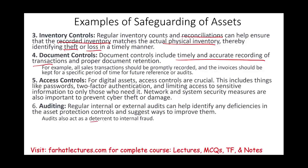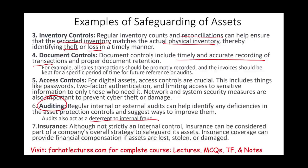Regular auditing acts as a deterrent for internal fraud — if employees know they are being audited regularly, that deters misconduct. Insurance is another form of safeguarding assets; while not strictly an internal control, it is part of the company's overall risk management strategy. Insurance coverage provides financial compensation if assets are lost, stolen, or damaged.